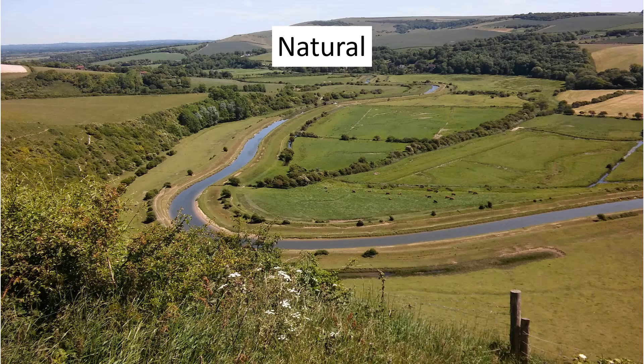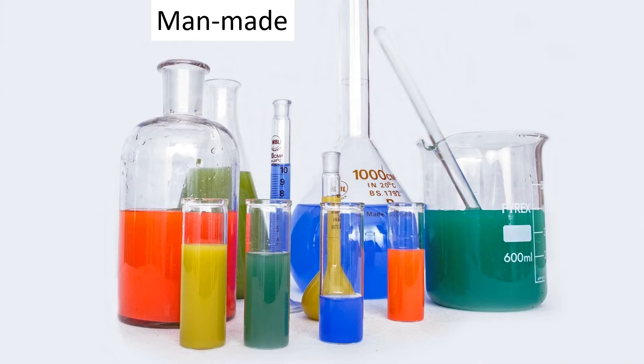Naturally occurring means made by nature, not man-made. While this may seem clear, you may encounter materials that make this very confusing. There are many different types of man-made materials which can be combined to make materials that look like minerals. These man-made materials are called synthetic.